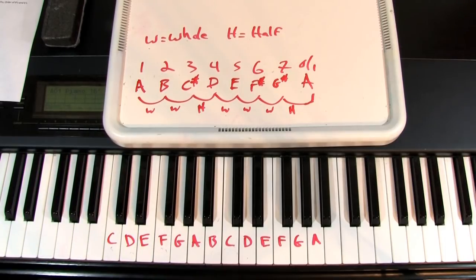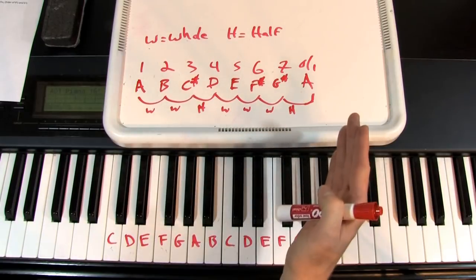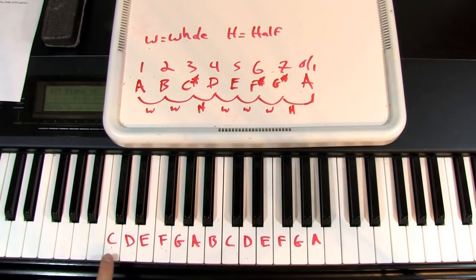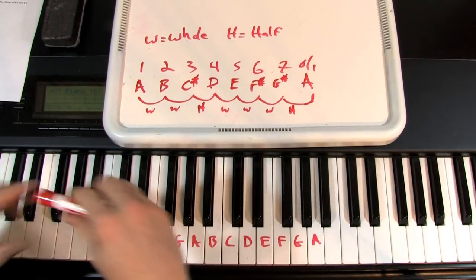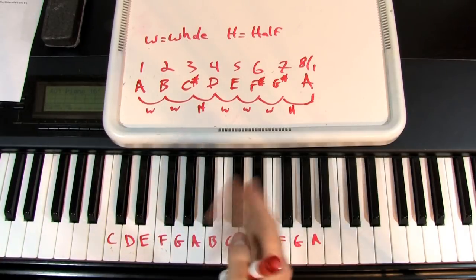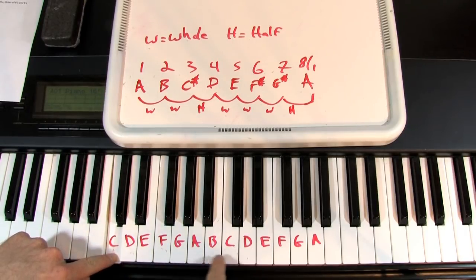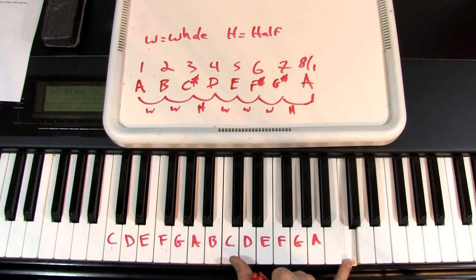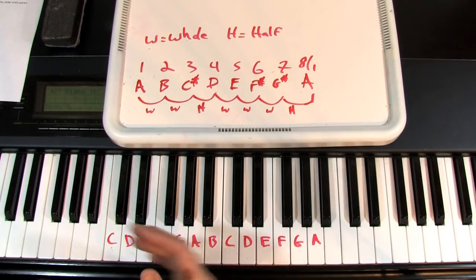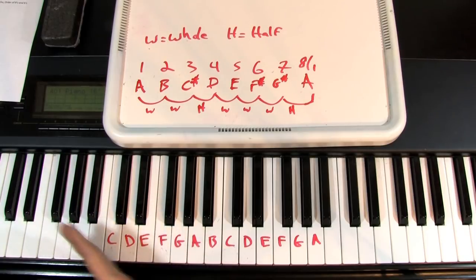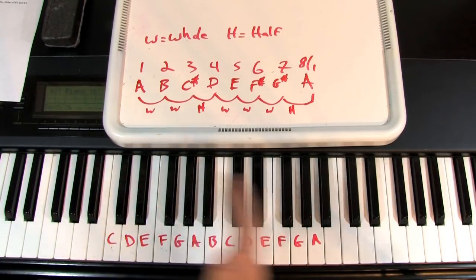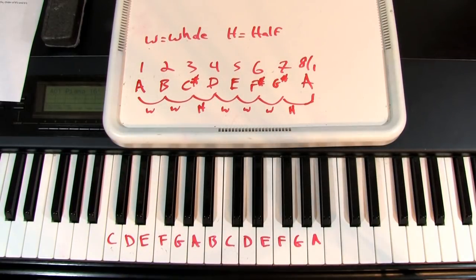A couple of important things to understand: there are seven different notes in a scale. Going back to the key of C — 1, 2, 3, 4, 5, 6, 7, 8 or 1. That's why I always write 8 slash 1, because I want to think of it as a one, not just an eight. These are the same note. When you go from a note to the next occurrence of that same note up, that's called an octave. An octave from G to G, or C to C — that's an octave spanning seven different scale steps.